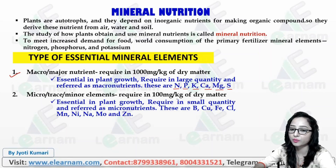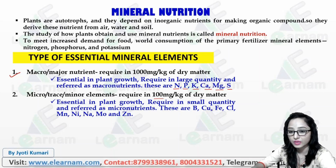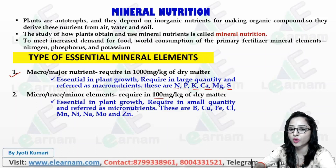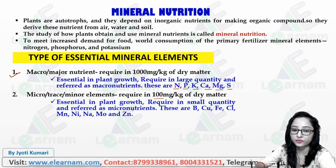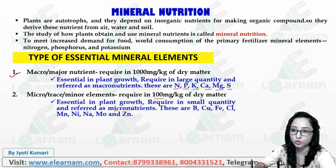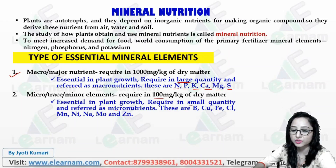If you look at the amount of micronutrients, how much will it be in a plant? It will be very little — that is 100 mg per kg of dry matter. Micronutrients are in small quantities; they are referred to as micronutrients. Micro means very small, macro means in large quantities.